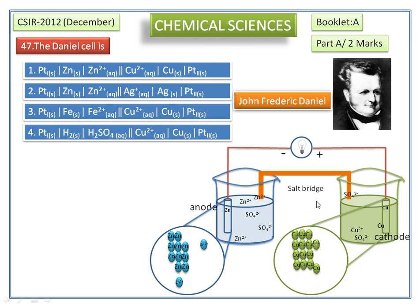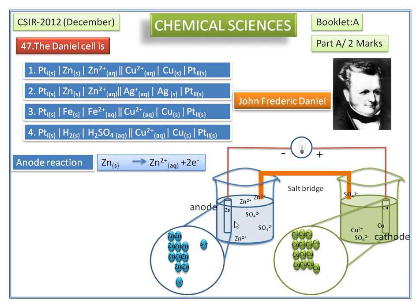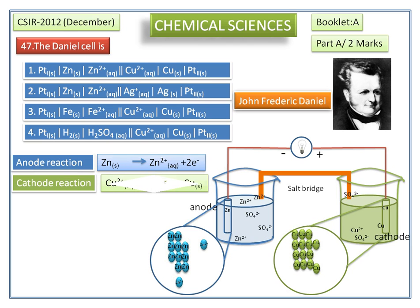Now we see the chemical equations occurring at the anode and cathode. On the left side, oxidation occurs — that is, loss of electron. At the anode, zinc is oxidized to Zn²⁺ and 2 electrons. On the right side, reduction occurs — that is, addition of electrons. At the cathode, Cu²⁺ ions are reduced to copper and 2 electrons.